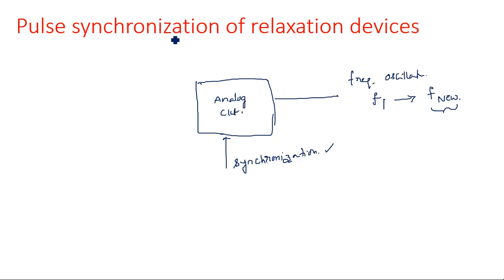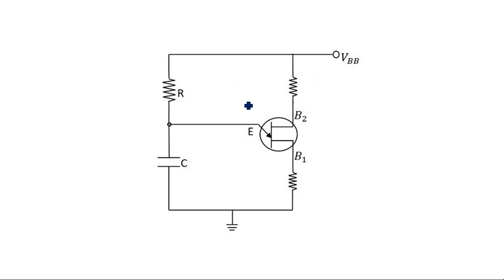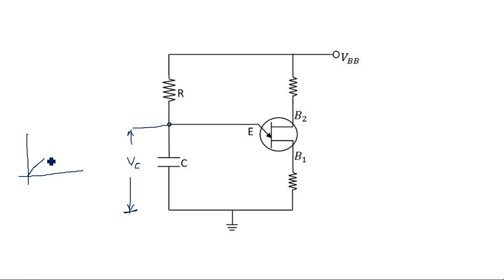The heading 'pulse synchronization of relaxation devices' means we are taking a UJT relaxation oscillator and applying a synchronization pulse to change its characteristics, so the output on/off conditions differ based upon the pulse. The purpose of the UJT relaxation oscillator is to generate a sawtooth waveform across the capacitor — the output voltage v0 or vc is the sawtooth waveform.